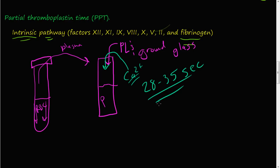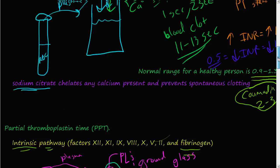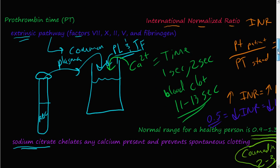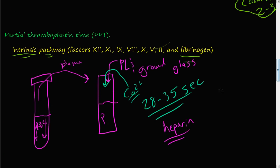Doctors order the partial thromboplastin time when a patient is on heparin, to monitor how the drug is working. If the patient is on Coumadin, they'll usually order the PT instead. For the PTT, there's no INR calculation — doctors just look at the raw number.